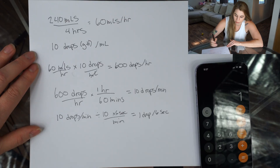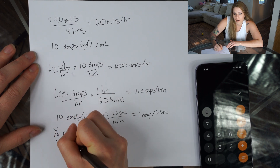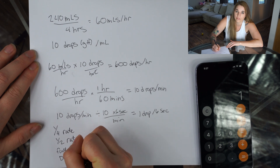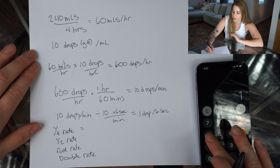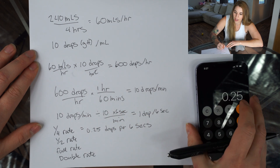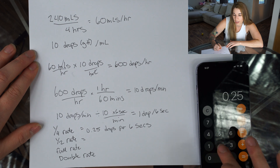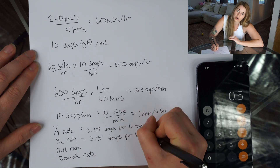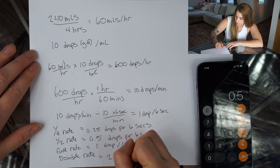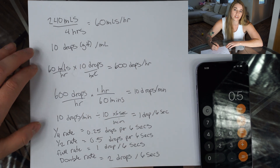This patient's normal administration rate is one drop every six seconds, but we administer more slowly at the beginning. A quarter of that initially for the first 30 minutes is 0.25 drops per six seconds, or one drop every 24 seconds. We double that at 30 minutes to half a drop every six seconds, or one drop every 12 seconds. We run the full rate of one drop every six seconds for two hours. Then for the last hour, we double the rate to two drops every six seconds.